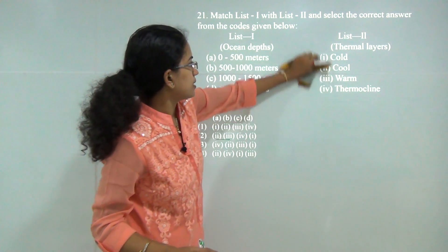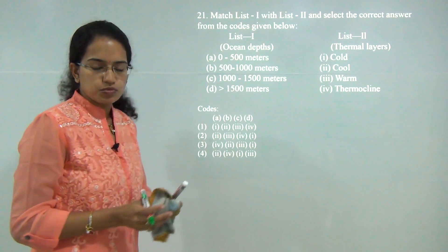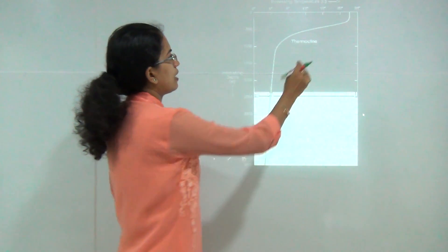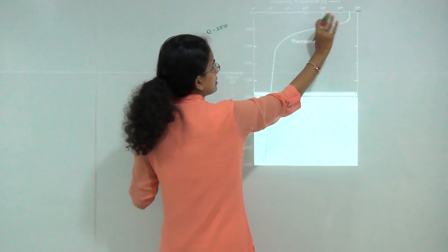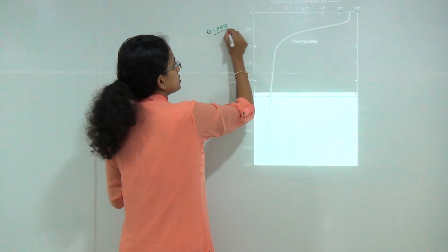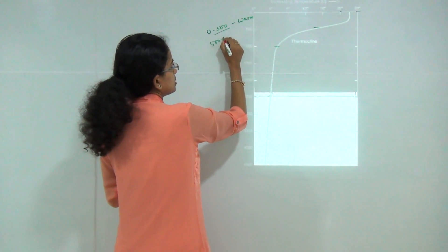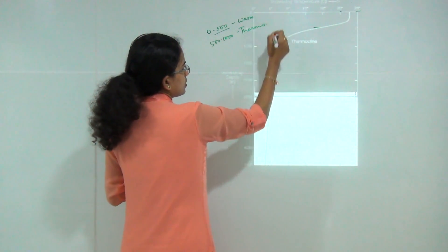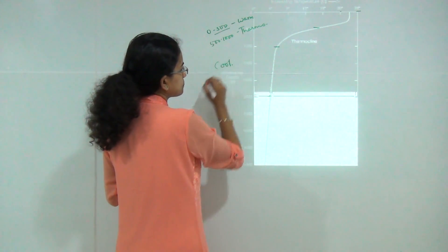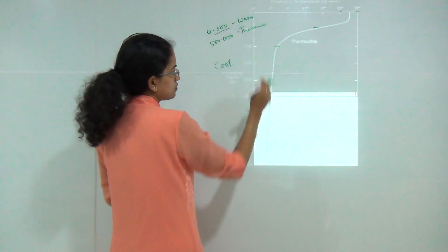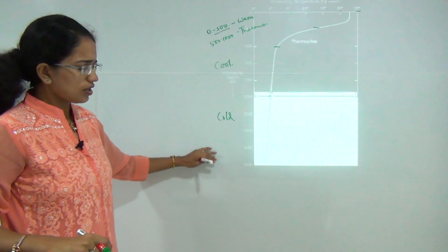Next: match ocean depths with the thermal layer. The topmost layer from 0 to 500 meters would be the warm layer, with temperatures of 24 to 26 degrees depending on seasonal variation. Then 500 to 1000 meters is the thermocline. From around 1000 to 2500 meters you have the cool layer, and below that the temperature falls very rapidly and this is the cold layer. With this we can demarcate the various layers of the ocean bottom.